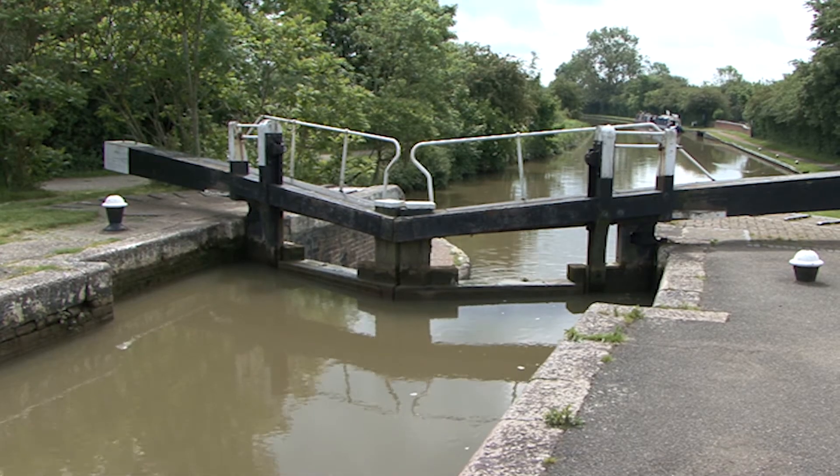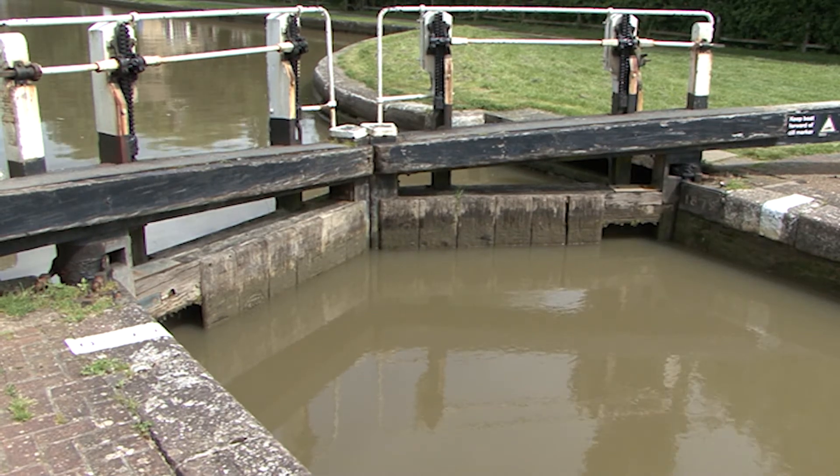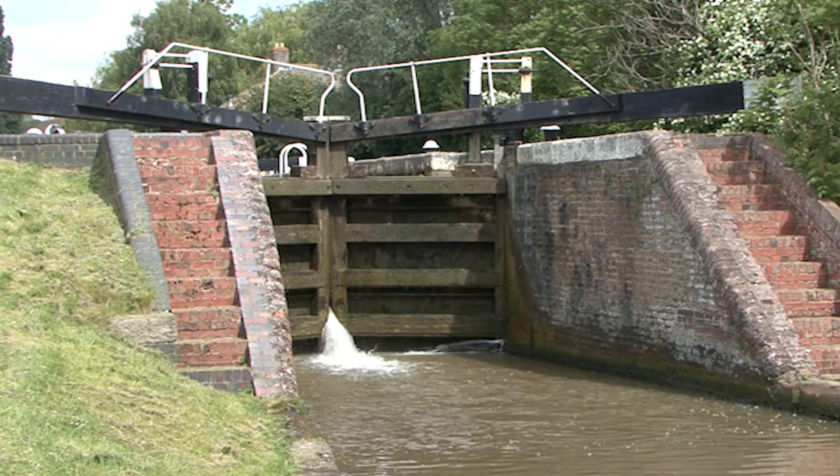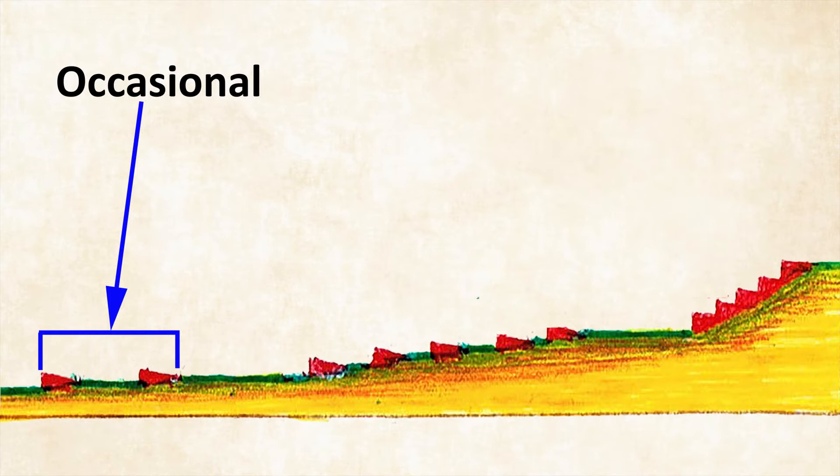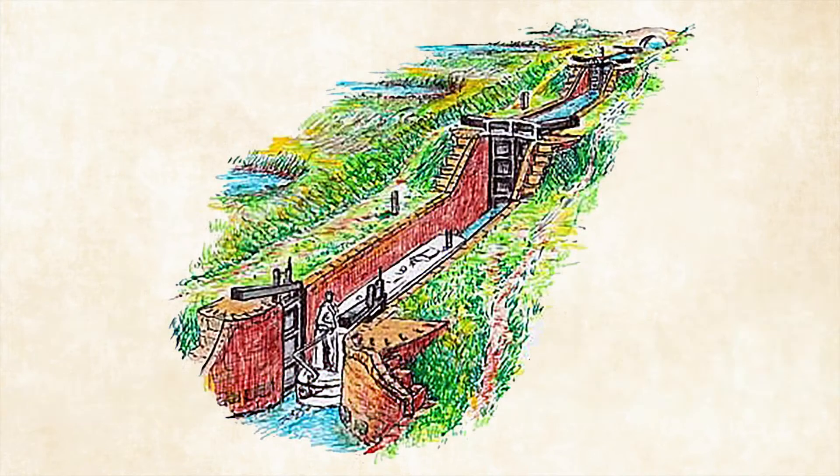Water always finds a level and locks simply use this characteristic to allow canals to be built over uneven landscapes. Occasional locks overcome gentle rises in level. A group of locks is called a flight and a staircase or riser helps to overcome very steep gradients.